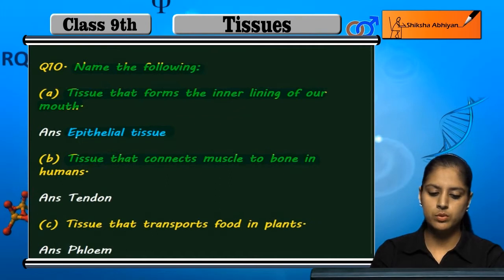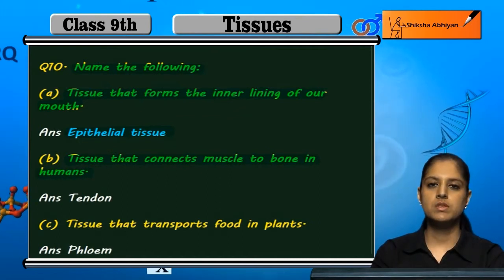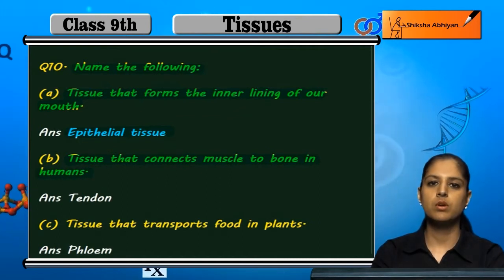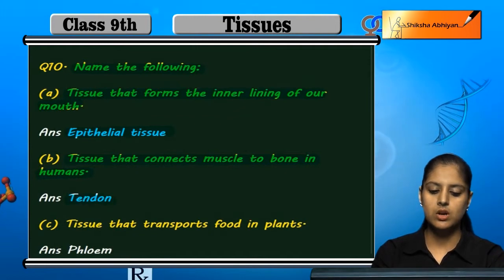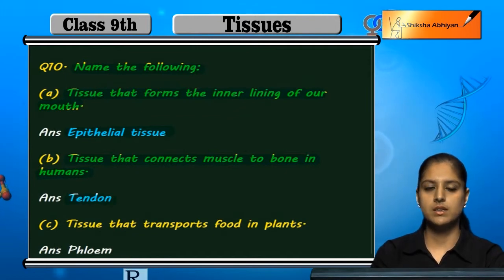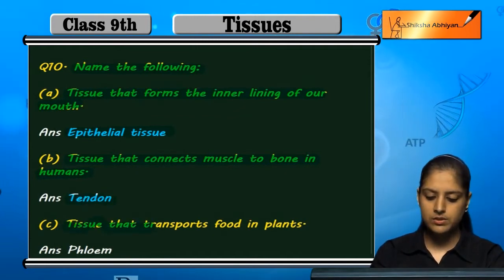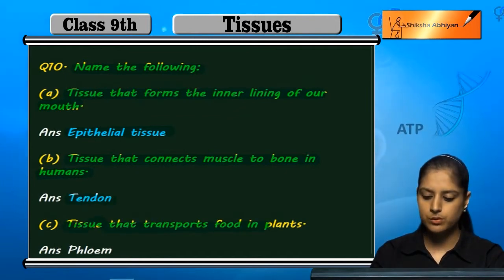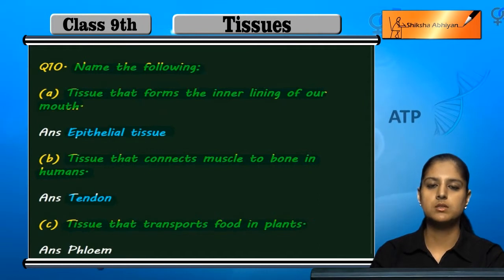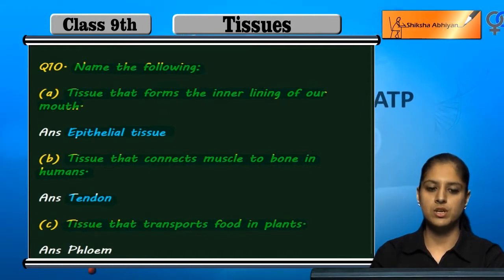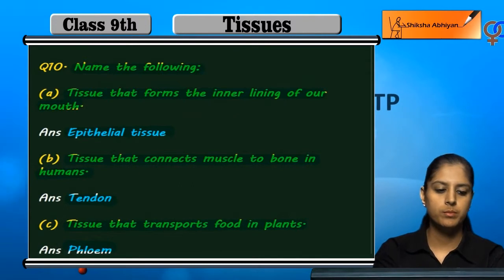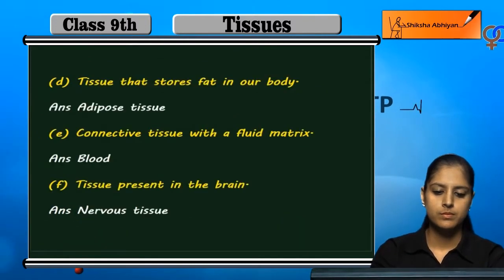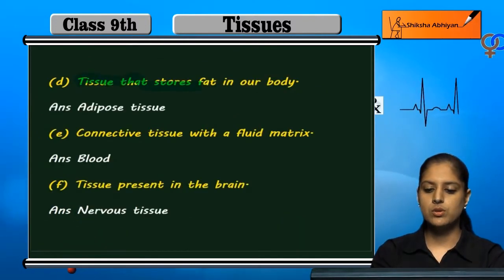...is called tendon. The tissue that transports food in plants is phloem. The tissue that stores fat in our body...